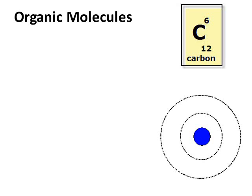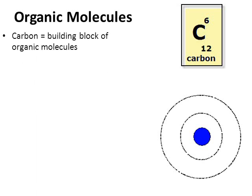Organic molecules are molecules that are built around carbon — maybe one atom of carbon, maybe multiple atoms of carbon. Here we have a periodic table square of carbon, and there's something fairly unique about carbon that I'll show you in just a moment.